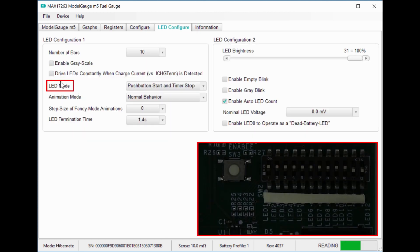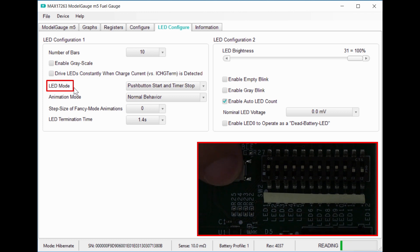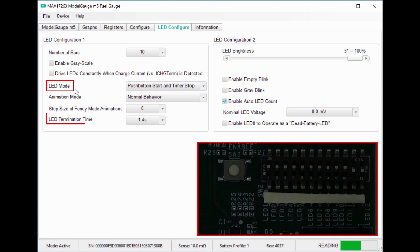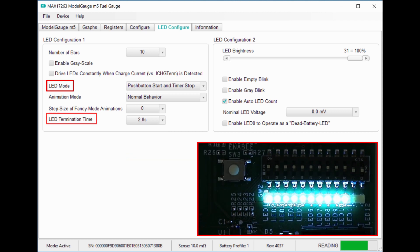The first thing I want to talk about is LED mode. By default, a button press turns on the LEDs for the LED termination time set down here. So if I change this to 2.8 seconds, that's how long they'll stay on when I push the button.